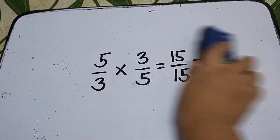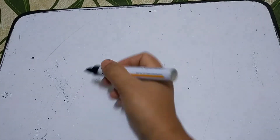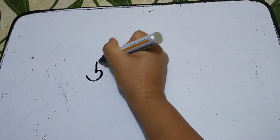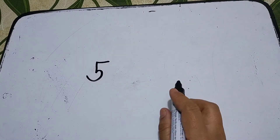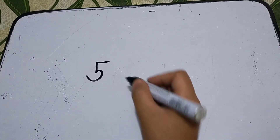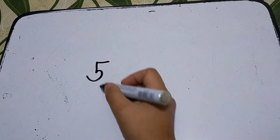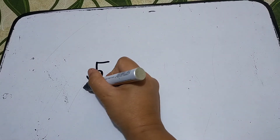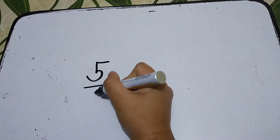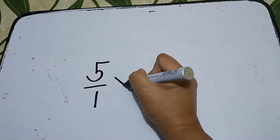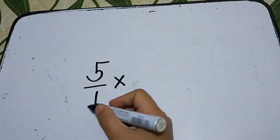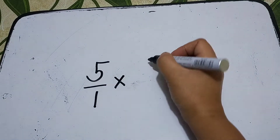Another example: let's say a whole number. We're going to multiply 5 by its reciprocal. If the given is a whole number, its denominator is always 1, so we write it as 5 over 1.